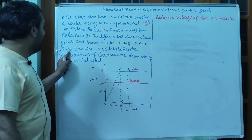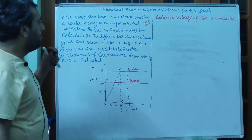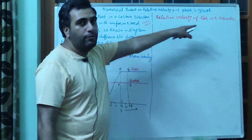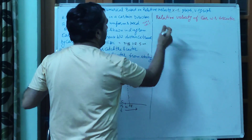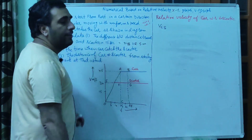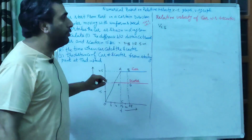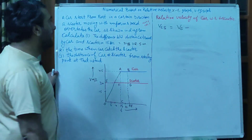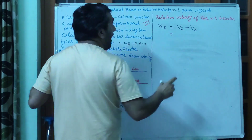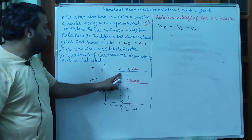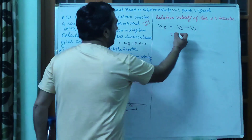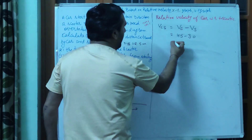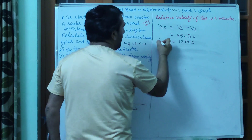Second part: the time when car catches the scooter। Relative velocity of car with respect to scooter (VCS) = VC minus VS। After 15 seconds, car की velocity = 45 meter per second, scooter की velocity uniform है = 30 meter per second। तो VCS = 45 minus 30 = 15 meter per second।